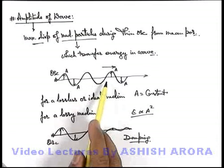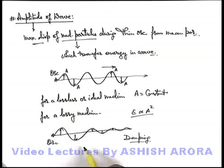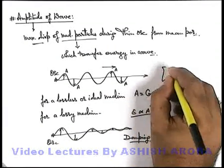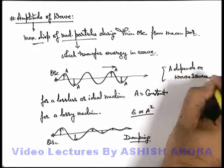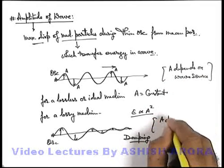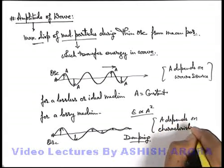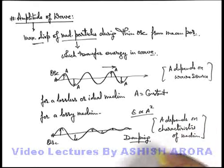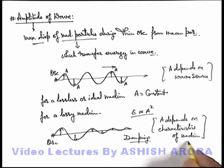We can state that in case of a lossless medium, amplitude of wave depends on the oscillator — that is, amplitude A depends on wave source only. But in case of a lossy medium or a damping situation, amplitude depends on characteristics of the medium in which the wave propagates. It all depends on how much energy the medium absorbs, so amplitude will damp quickly or may last for a long duration depending on the type of medium.